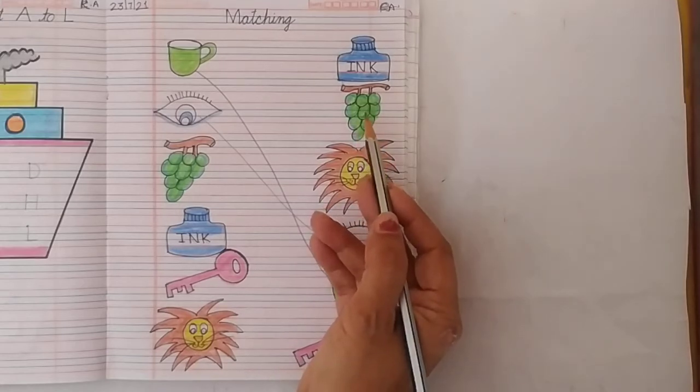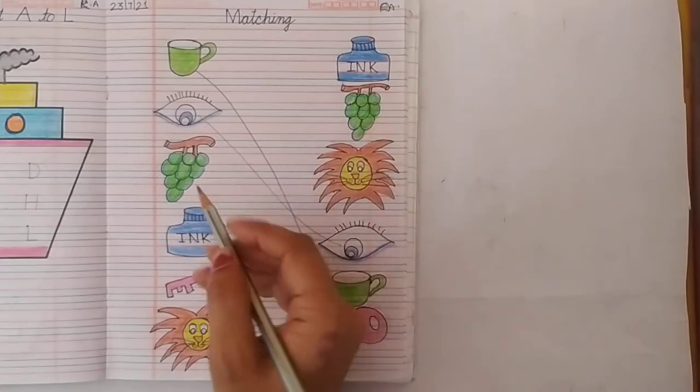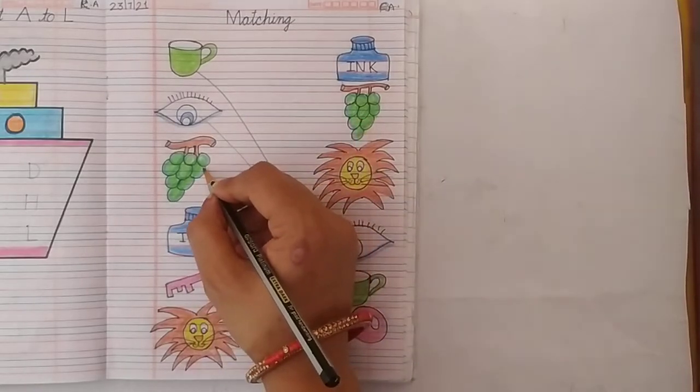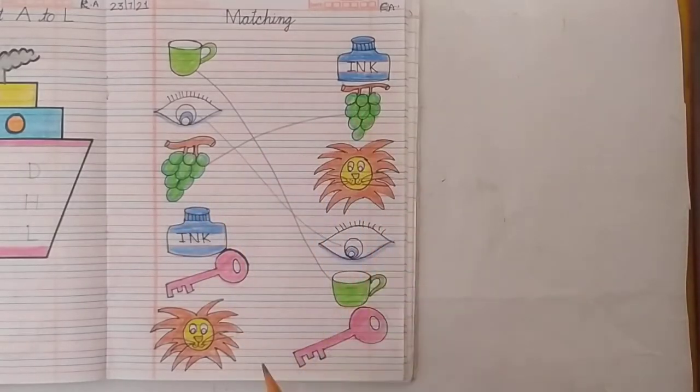Look here. Here is a bunch of grapes. The grapes. So kids, we match grapes with grapes. Like this.